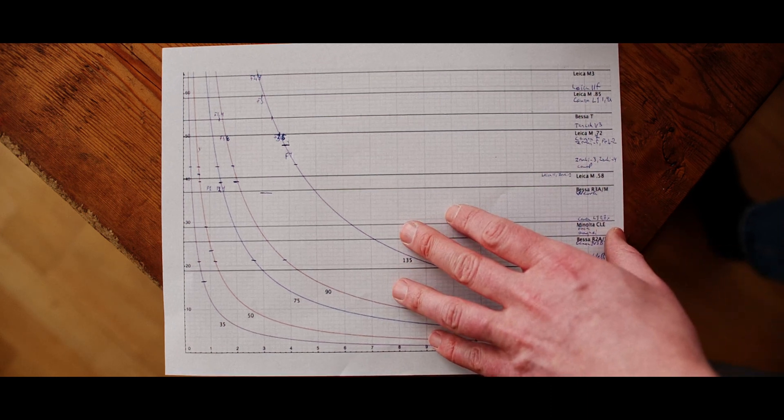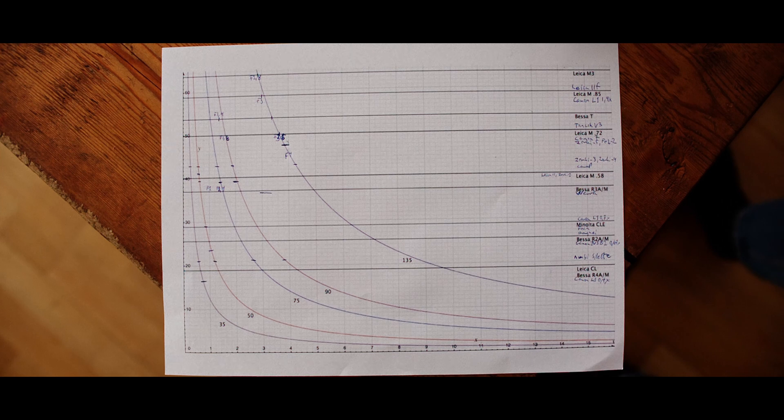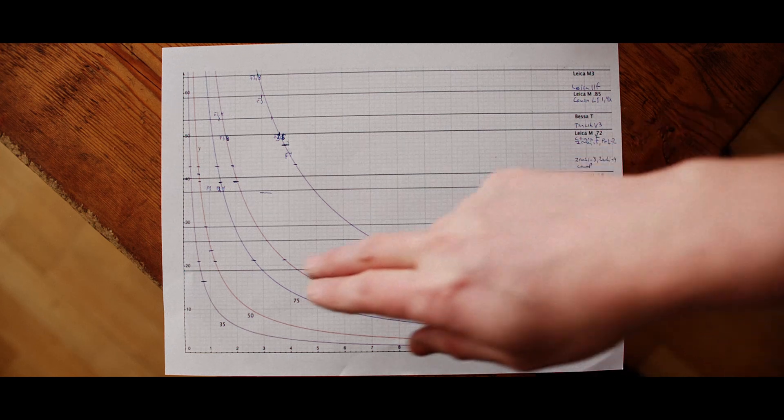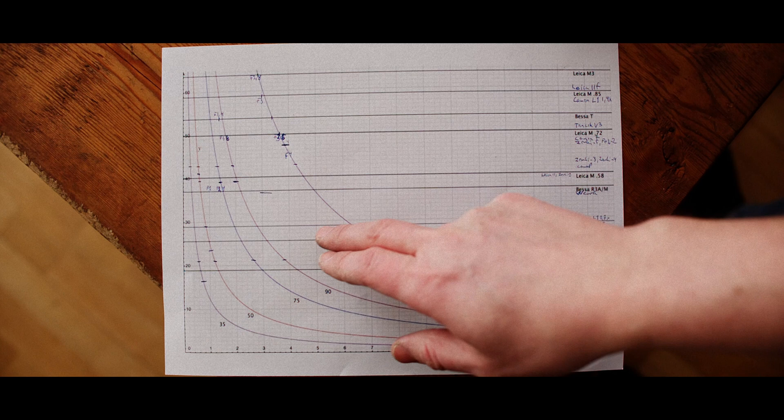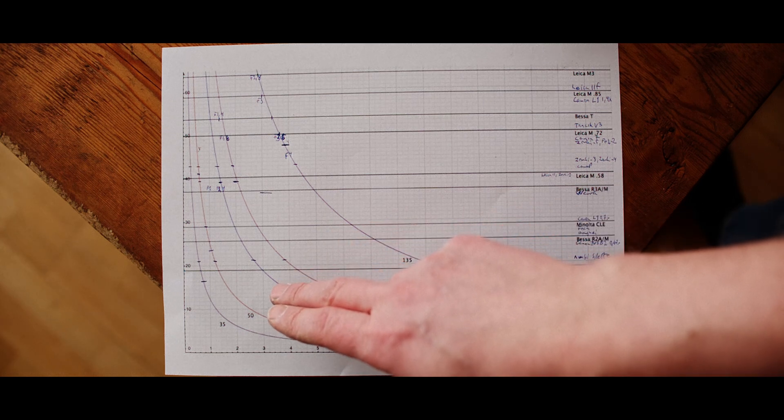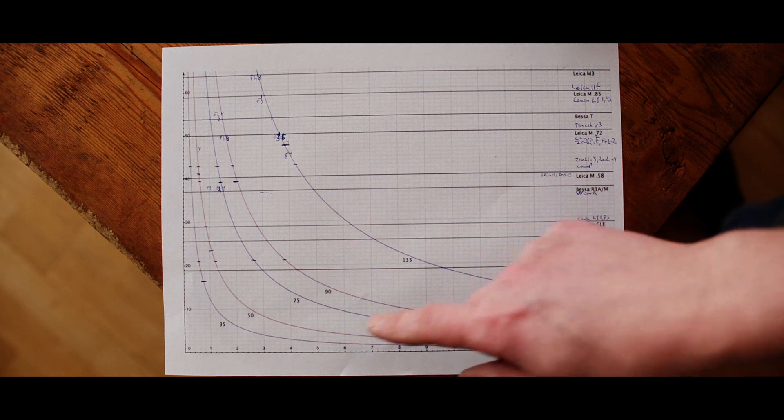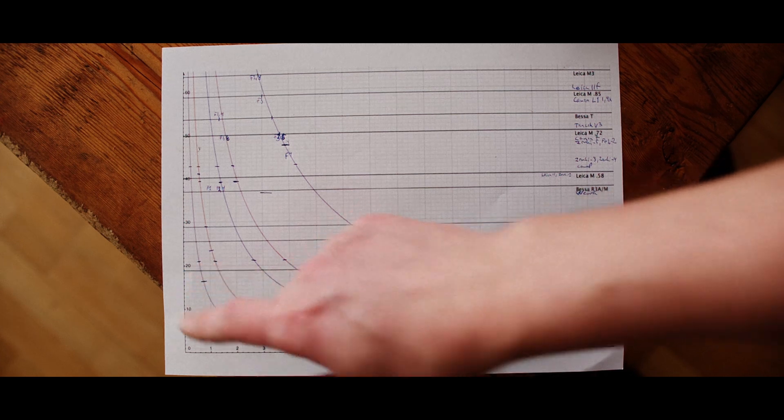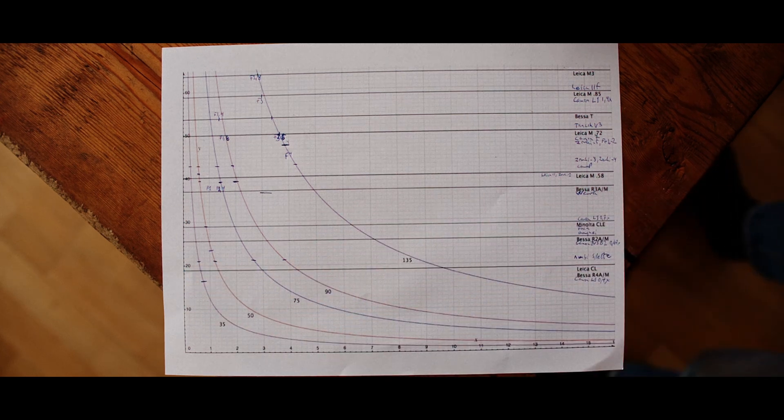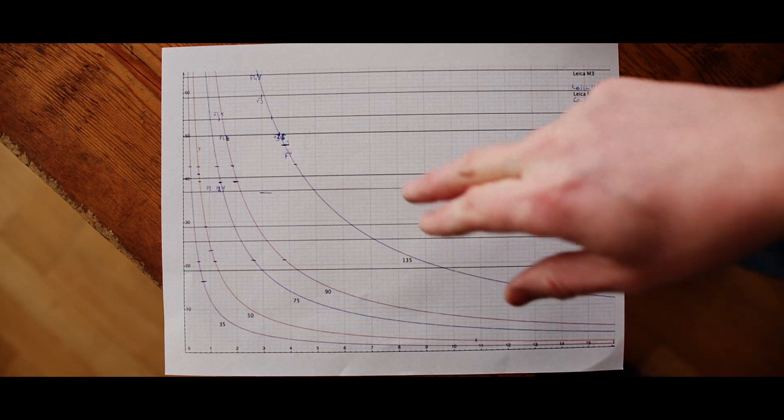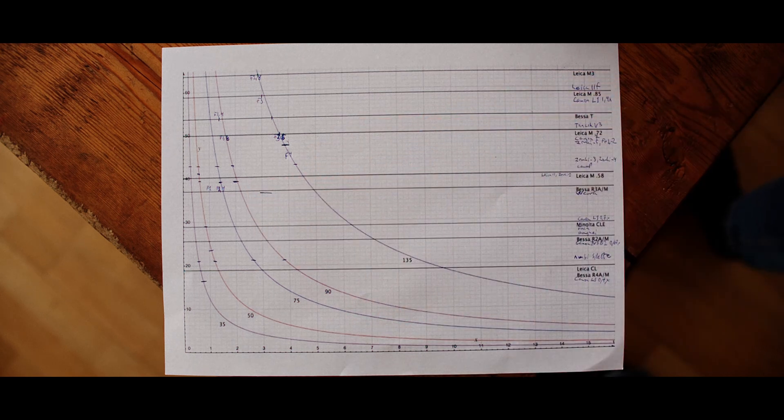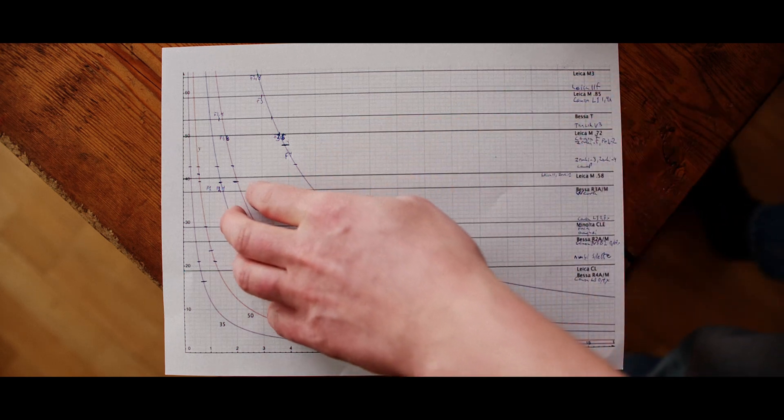But to add to this there are a lot of other things that makes it easy and nice to focus. And I think longer rangefinder base means a camera that is easier to focus. The Canon L1 at the low magnification. Everything becomes so small. It becomes difficult. And if your vision is bad, I think high magnification is probably better. Even if the effective base is not as long.